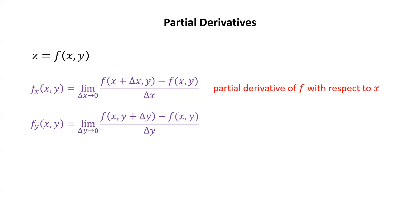Similarly, f sub y of xy is the limit as delta y goes to zero of f of x, y plus delta y minus f of xy over delta y. This is known as the partial derivative of f with respect to y. This time, x is being treated as a constant when you differentiate. So in practice for elementary functions, differentiating with respect to y is just like what you would do in single variable calculus, pretending that this is just a function of y and x is being treated as a constant.